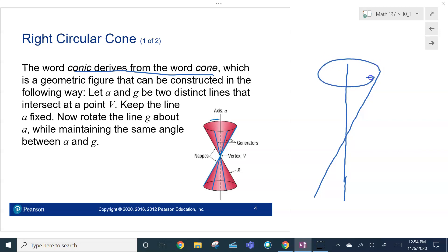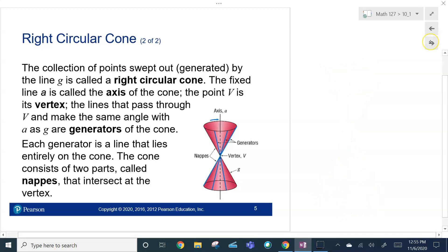If I rotate that around, if you can imagine it rotating around, it's creating our right circular cone. That's the collection of all those points swept out as this right circular cone.